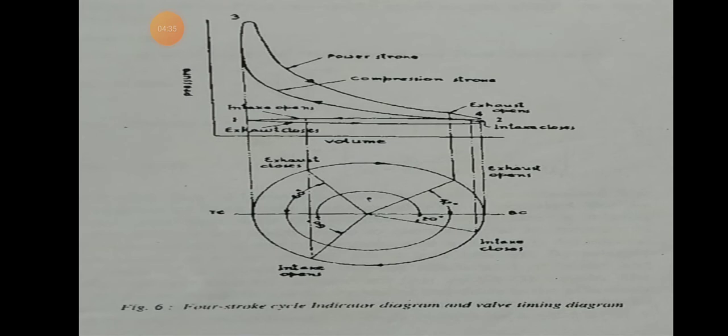Here is the PV diagram of the 4-stroke IC engine. We can see intake open, intake closes, exhaust valve opens, compression stroke, power stroke, and all the strokes represented. Below the diagram there will be the valve timing diagram.